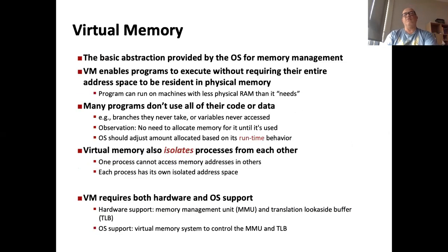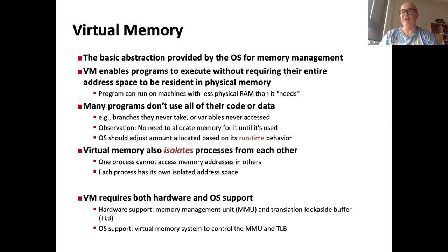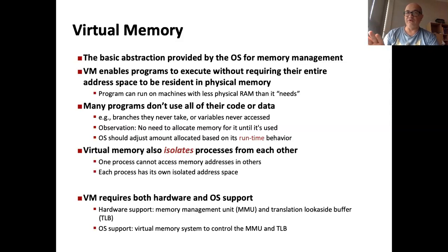The virtual memory is the abstraction the operating system provides and it has a couple of supported features. First, all processes don't have to have all of their memory in physical memory at all times, because we want to utilize memory usage among processes — we should let them use memory only when they are actually accessing those memory areas. Otherwise, keeping everything in memory is wasteful. We also have other competitors for memory such as file cache, page cache, and device cache. So RAM usage is on a need basis — you use RAM as much as you need.